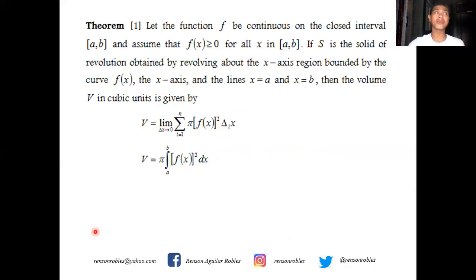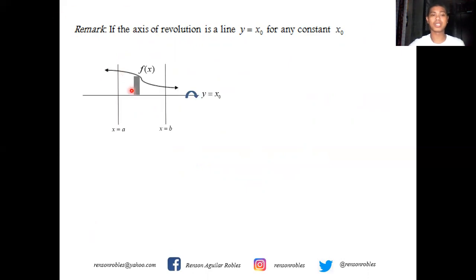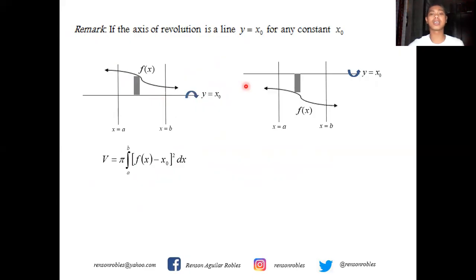What if the axis of revolution is no longer the x-axis, but we still take an element perpendicular to it and the axis is part of the region? If the axis of revolution is a line y equals x sub zero for any constant x sub zero, and the region is bounded above by y equals f of x and the line y equals x sub zero, then the volume equals pi times the integral of f of x minus x sub zero, squared, dx from a to b. If the axis of revolution is above the region and the region is bounded below by y equals f of x, then the volume equals pi times the integral of x sub zero minus f of x, squared, dx from a to b.